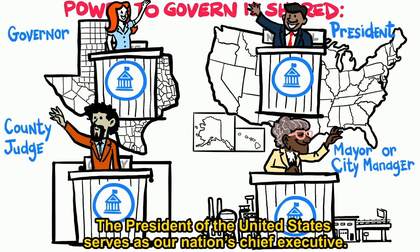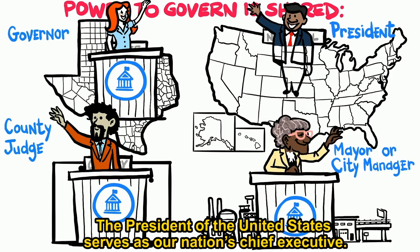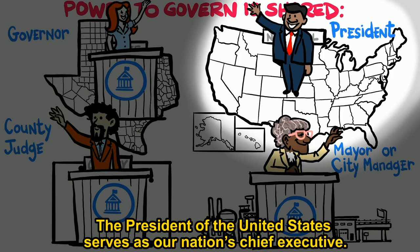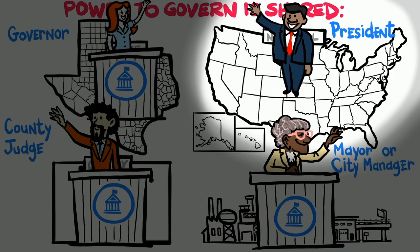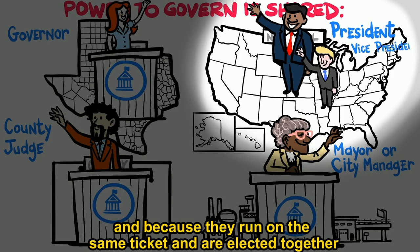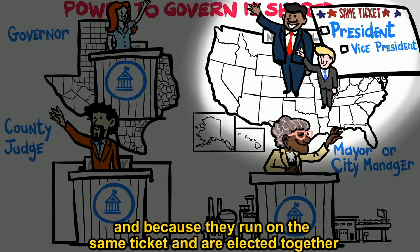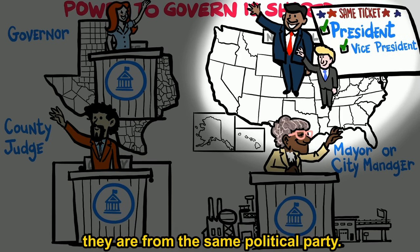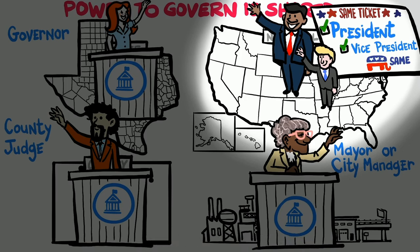The president of the United States serves as our nation's chief executive. The president is assisted by the vice president, and because they run on the same ticket and are elected together, they are from the same political party.